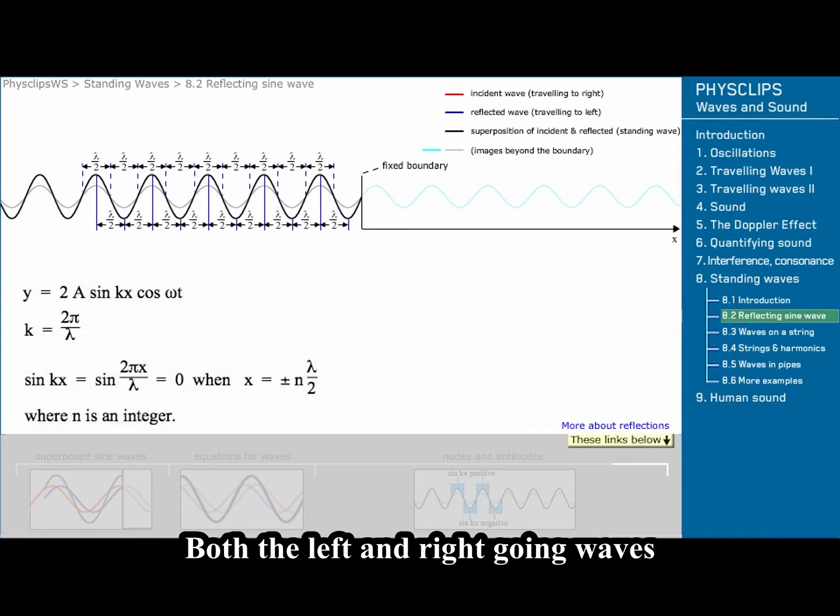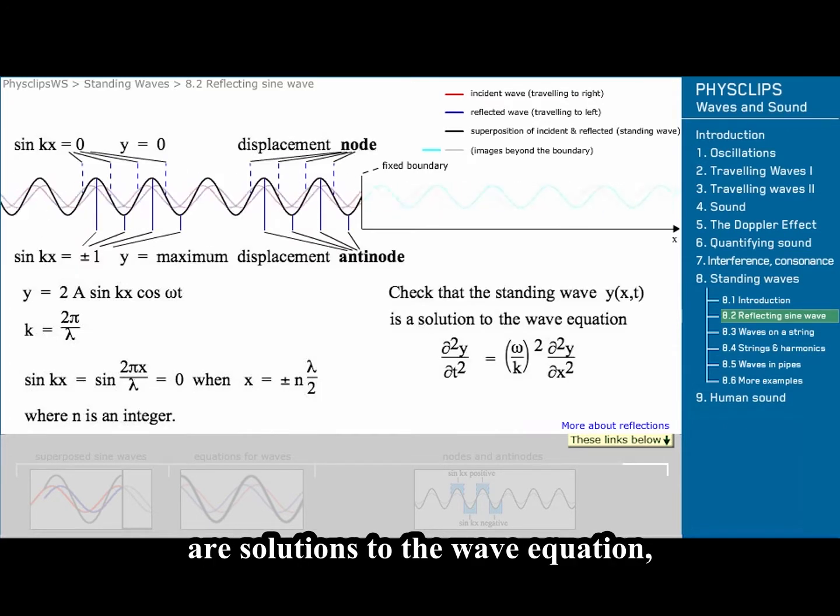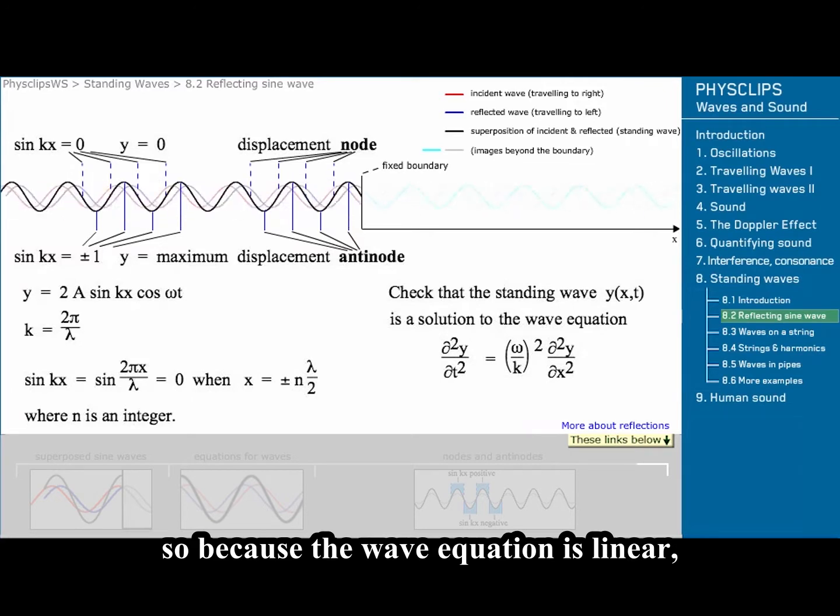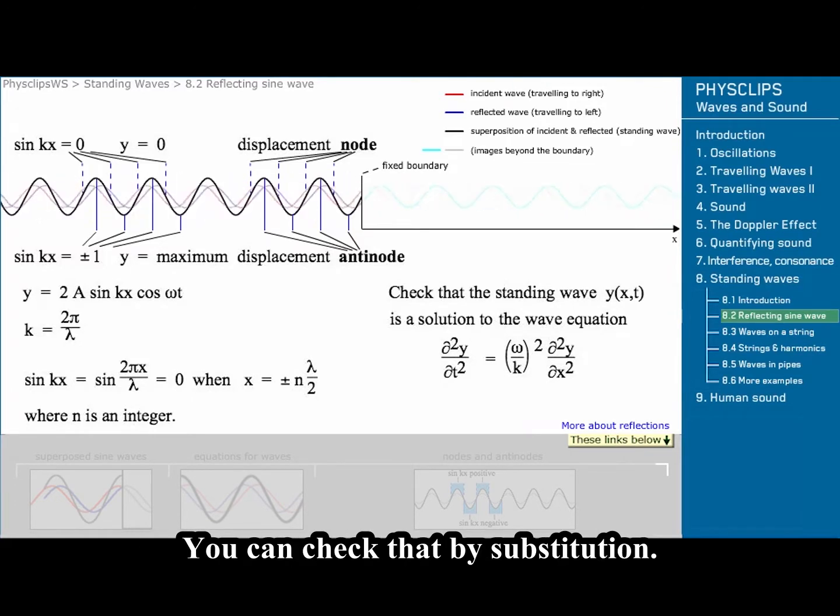Both the left and right going waves are solutions to the wave equation. So, because the wave equation is linear, the standing wave must also be a solution. You can check that by substitution.